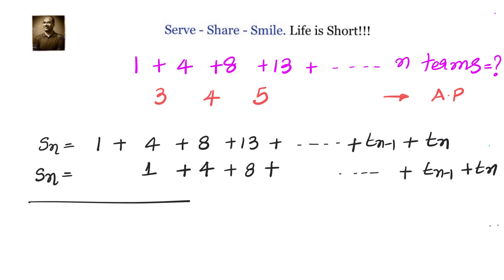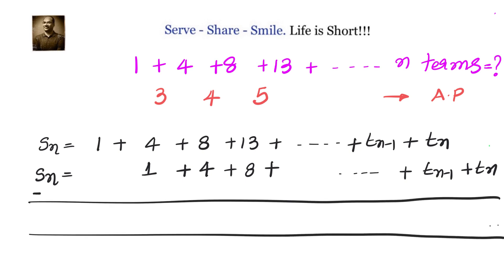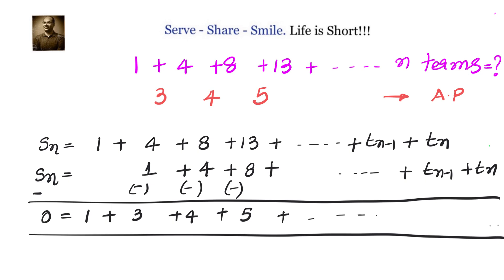Now let us subtract the two expressions and see what happens. The first terms give 0; then we get 1, then 4 minus 1 which is 3, then 4, then 5, and so on — like that — and finally minus tn on the right side.